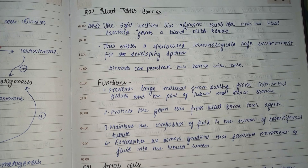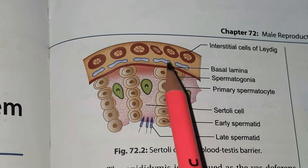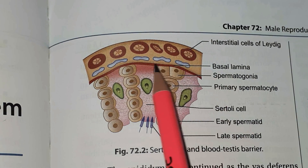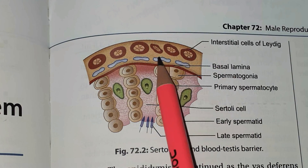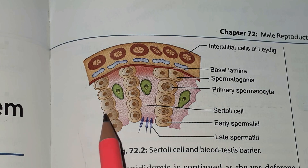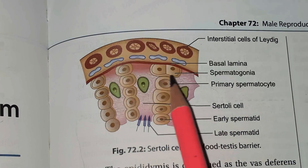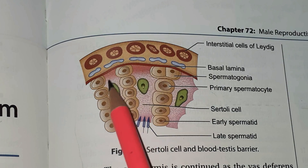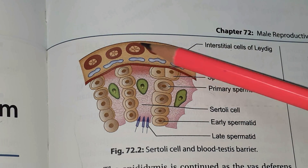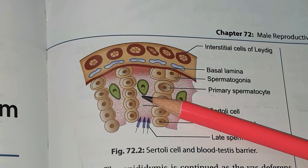This figure represents the blood testis barrier. These are the Sertoli cells, which I have covered in an earlier video. This is the basal lamina, these are the interstitial cells of the tissue, and this entire section shows the lumen of the seminiferous tubules. The Sertoli cells — seen here in pinkish color — form tight junctions among each other, preventing blood or anything from the interstitial area from passing into the seminiferous tubules.